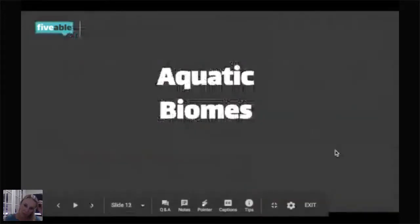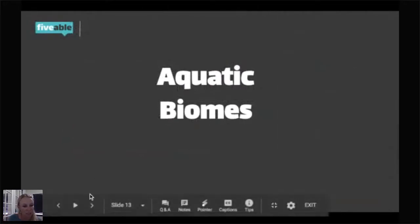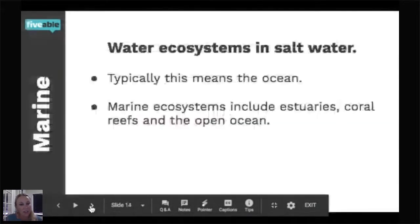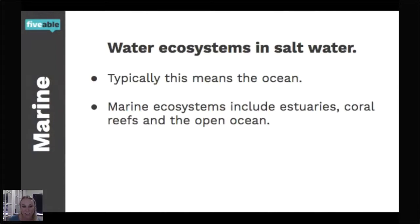Now we're going to jump to aquatic biomes — things that are in the water. First, some key terms: marine means any water ecosystem that's in saltwater, so think saltwater, typically the ocean. Marine ecosystems include estuaries, coral reefs, and open ocean.